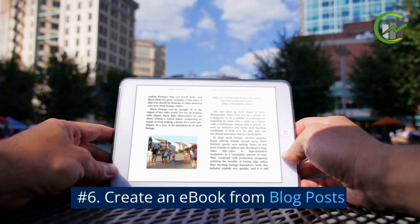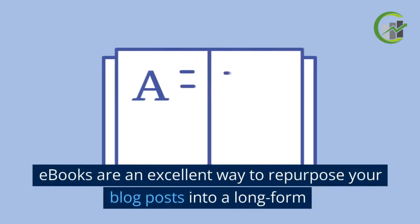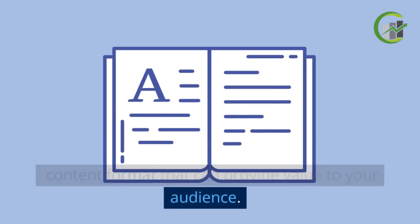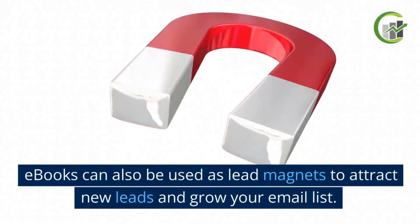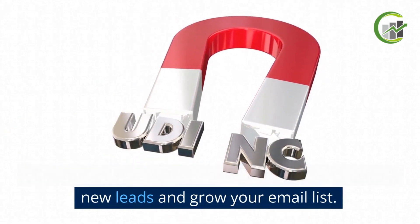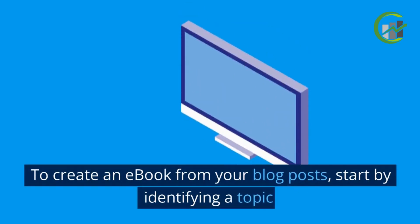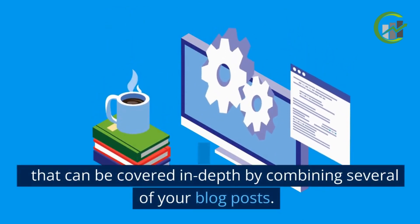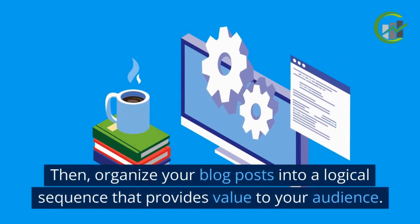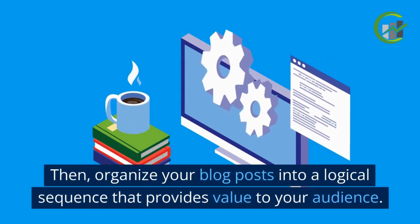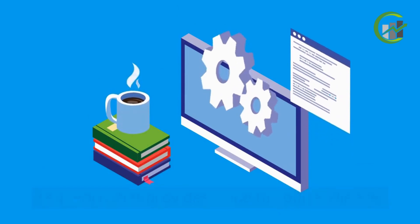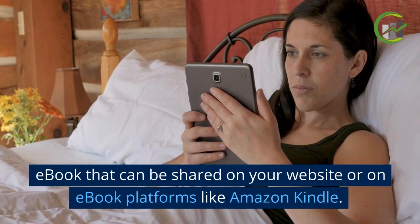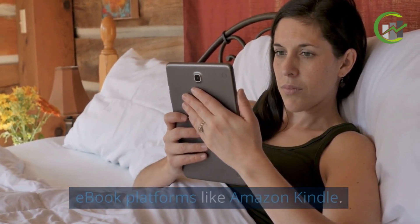Number 6. Create an eBook from blog posts. E-books are an excellent way to repurpose your blog posts into a long-form content format that provides value to your audience, and can also be used as lead magnets to attract new leads and grow your email list. Start by identifying a topic that can be covered in depth by combining several blog posts, organize them into a logical sequence, then edit and add visuals to create a professional-looking eBook to share on your website or on platforms like Amazon Kindle.